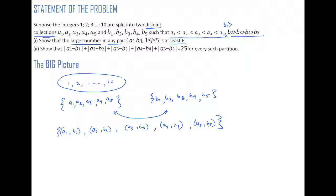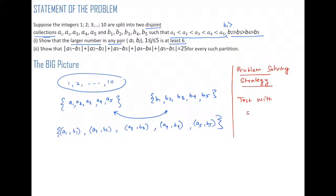As usual, we are interested not only in the solution but also in learning some problem-solving strategy we can use elsewhere. Here we will use a very simple strategy: test with a special case. Often when we are asked to prove a general result, it is very effective to test with one particular case and see exactly what's happening. Suppose (a2, b2) is a pair where the larger number is not at least six.